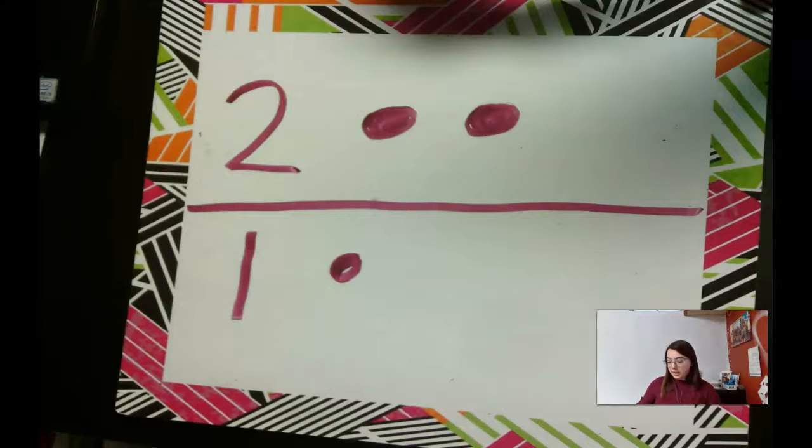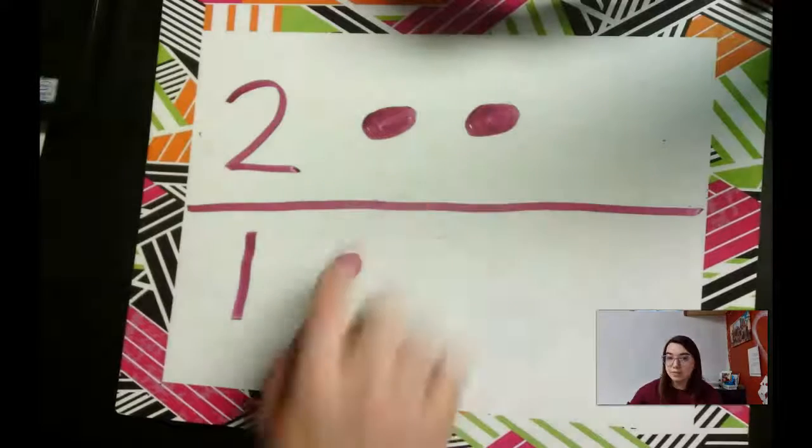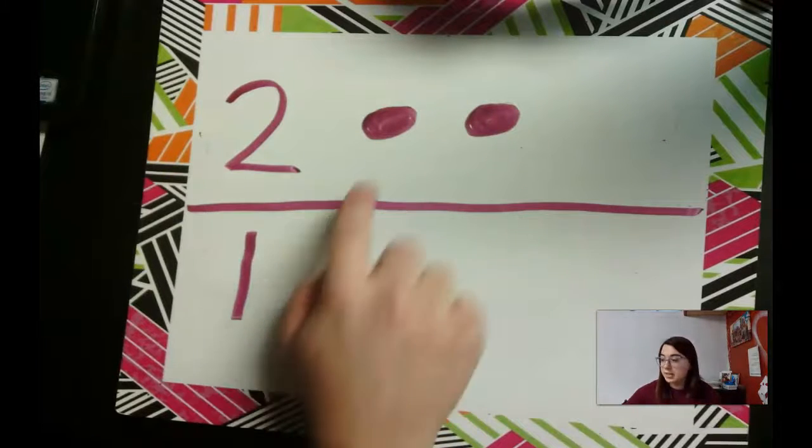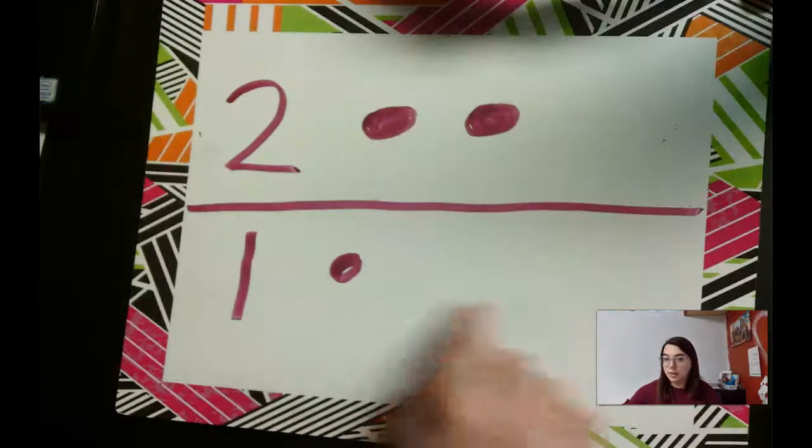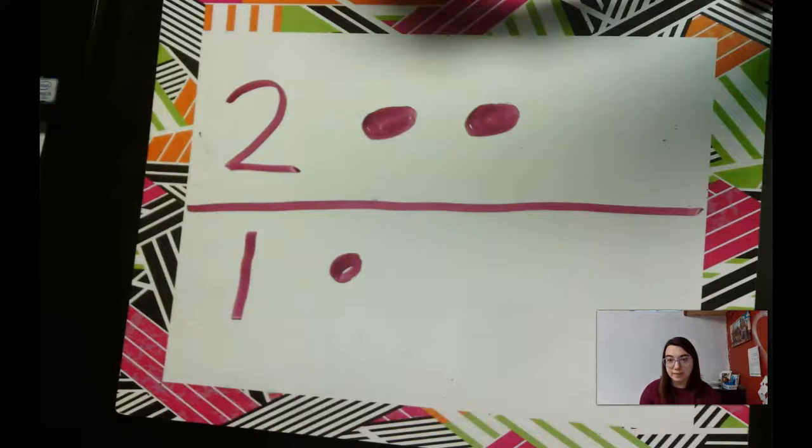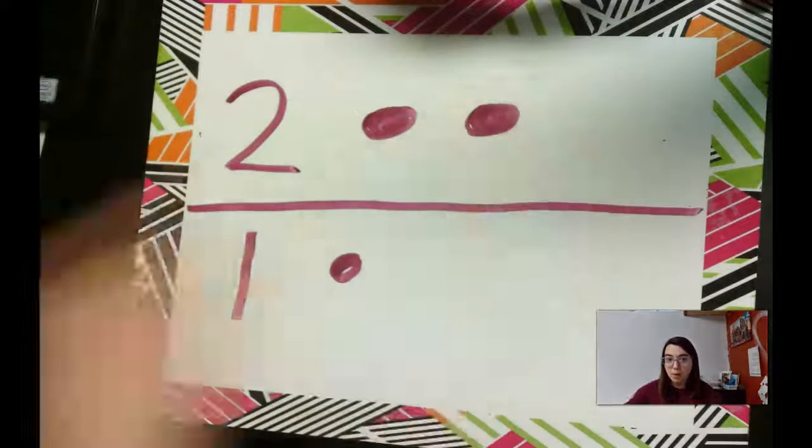All right, so now we can look like the towers, and which one, which line of dots is longer. So I see that this line has more dots than this line. Wow, so this one has more.